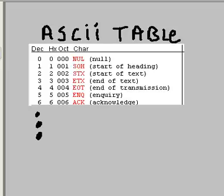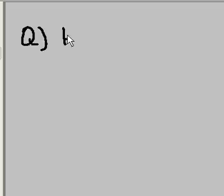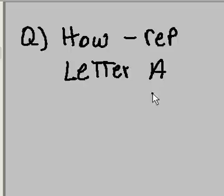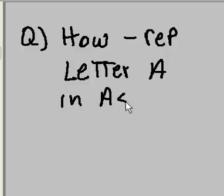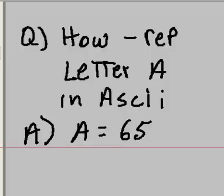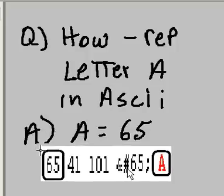How does that help us? The next big question is: how do you represent a letter — let's say the letter A? Letter A in ASCII is simple: the answer is character 65, decimal character 65. And if you go to the ASCII table and look it up, that's what you're going to see.